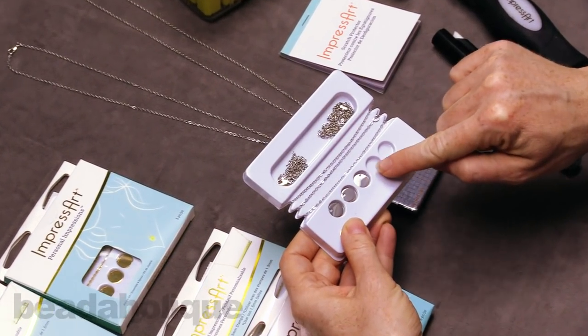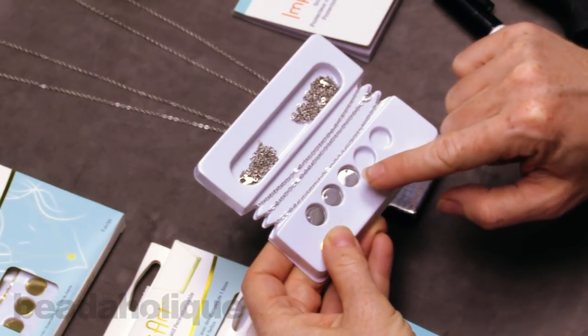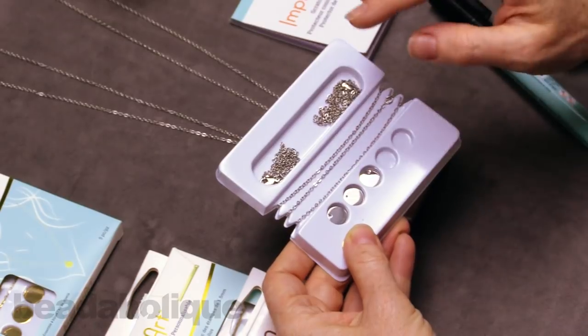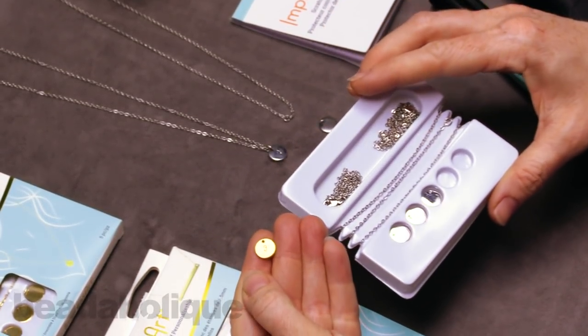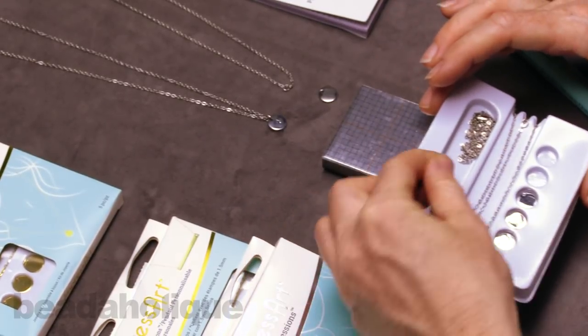So you get five of these little stamping blanks. They are silver plated. They're 10 millimeters for the little round circle one and you get five necklaces and you also get five jump rings and they even give you a little sample test blank to practice on. So a really great little kit.